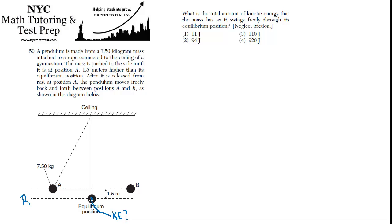They want to know the kinetic energy at the equilibrium position. The formula for kinetic energy is one-half mv squared. Now the problem with this is you know the mass, right? We've been given the seven and a half kilogram mass. But we don't know the velocity.